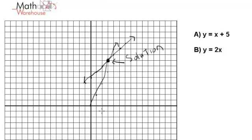And what point is that? That's the point x equals 1, 2, 3, y equals 1, 2, 3, 4, 5, 6, 7, 8.